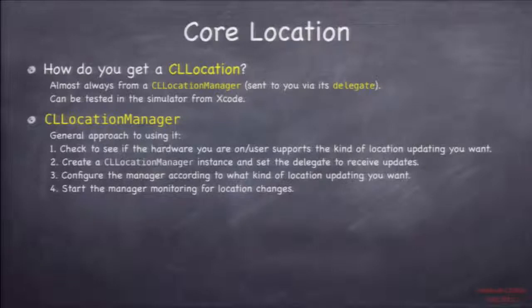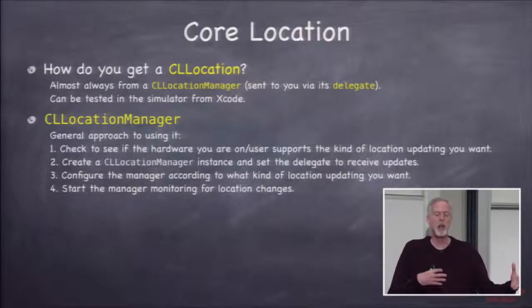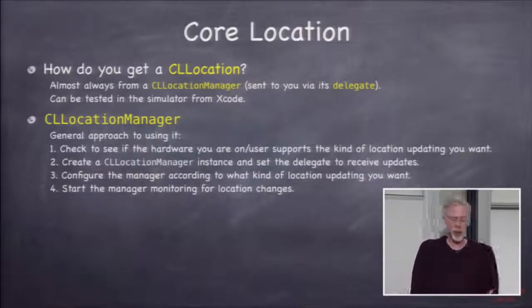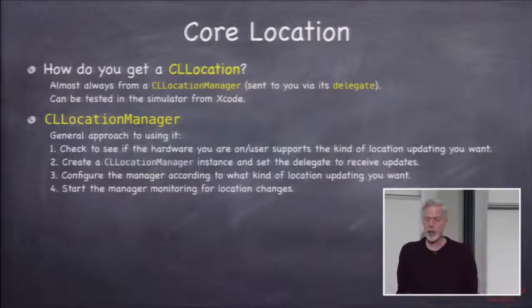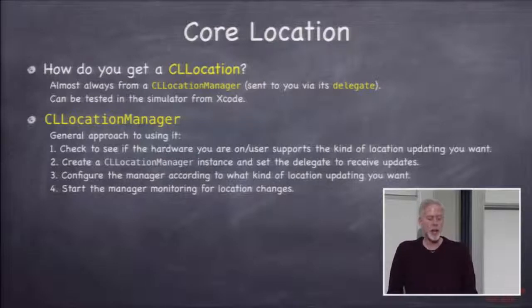All right. So CLLocationManager, how do we use this thing to get our location? You create it, you check to see what hardware you have, because every different device, iPhones 4s, iPhone 5s, iPads, have different hardware in them for figuring out where they are. And so you're going to check to see what's available. Then you're going to set this delegate to be any object you want, and then you're going to configure it for what kind of location updates you want, accuracy, things like that. And then you're going to start it running, and it's going to start reporting to you where you are.